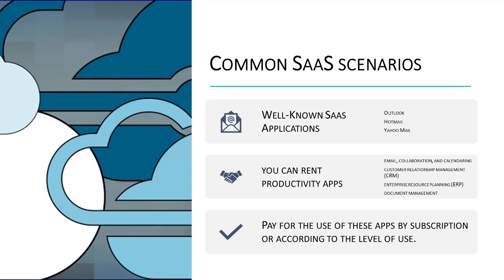Those previous examples were free services available for personal use. For organizational use, a company can rent productivity apps such as email, calendaring, and collaboration. Even sophisticated business applications such as CRM and ERP can be rented for use. The organization simply pays for the use of these apps by subscription or according to the level of use.